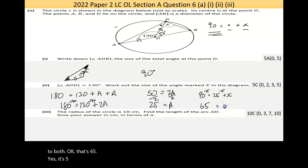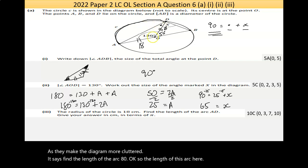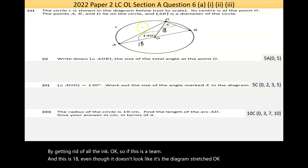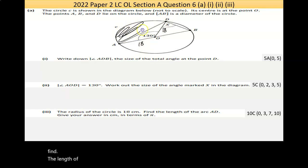Below it says the radius of the circle is 18 centimeters, so I now know that's 18. Find the length of the arc AD, so the length of this arc here. Let me make the diagram less cluttered by getting rid of all the ink.